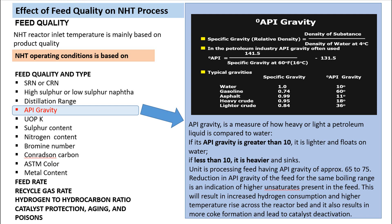Welcome back to Alchemy Academy platform. In this video lesson I'll discuss the effect of process variables on the NHT process. Under that topic, I was discussing the effect of feed quality on the NHT process — covering effect of SRN, OCRN, what kind of feed we are processing, sulfur content variation effects, and distillation runs. Those topics have already been covered.